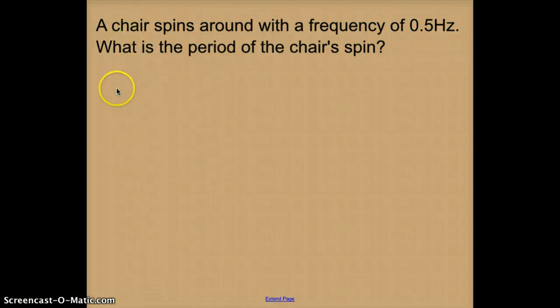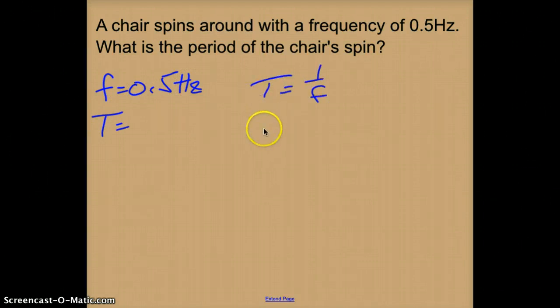A chair spins around with a frequency of 0.5 hertz, so the first thing I'm going to put is my frequency of 0.5 hertz. What is the period of the chair's spin? So my time period is equal to 1 divided by the frequency.